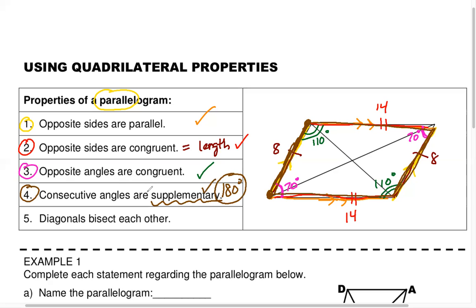Check. That brings us to our last property, property number five: the diagonals bisect each other. Think of 'bi' as two — like bicycle — and 'sect' like sections. So bisect means the diagonals chop each other into two equal sections — they chop each other in half.